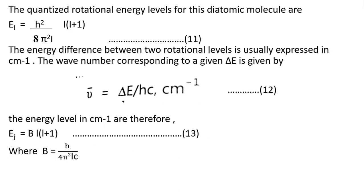L is called the orbital quantum number and takes values L = 0, 1, 2, 3, and so on. Only finite quanta of energy may be absorbed or emitted. The quantized rotational energy levels for this diatomic molecule are E_L = h² / (8π²·I) · L(L+1), equation number 11. The energy difference between two rotational levels is usually expressed in per centimetre.